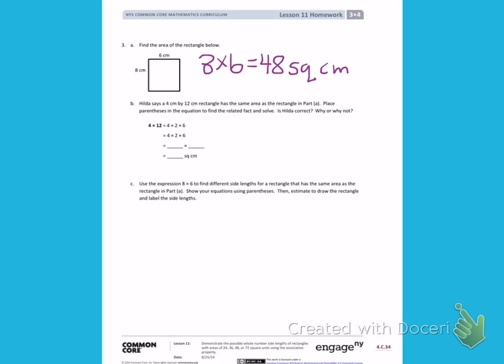Part B. Hilda says a 4 centimeter by 12 centimeter rectangle has the same area as the rectangle in Part A. So Hilda is saying that a rectangle that is 4 centimeters by 12 centimeters is also 48 square centimeters as the area. Place parentheses in the equation to find the related fact and solve. Is Hilda correct?